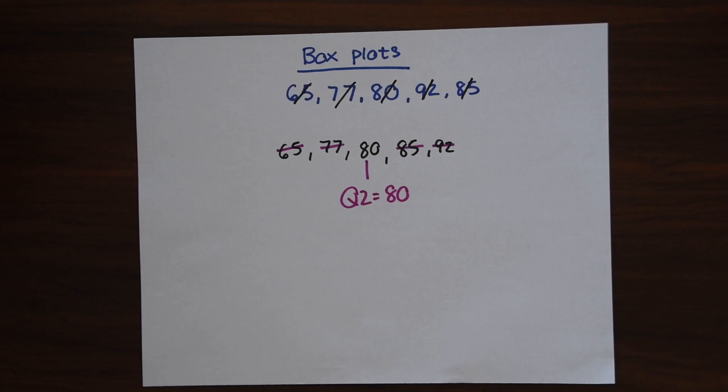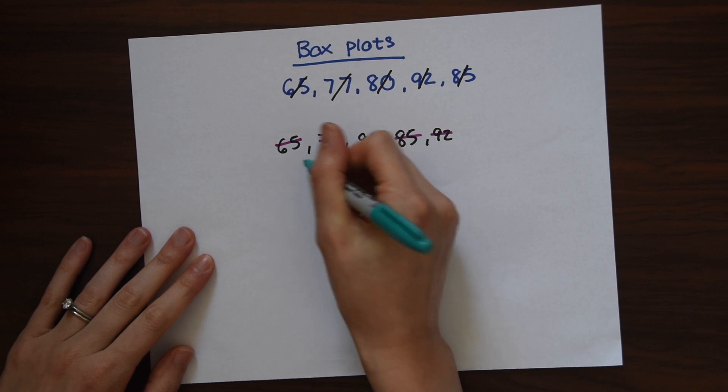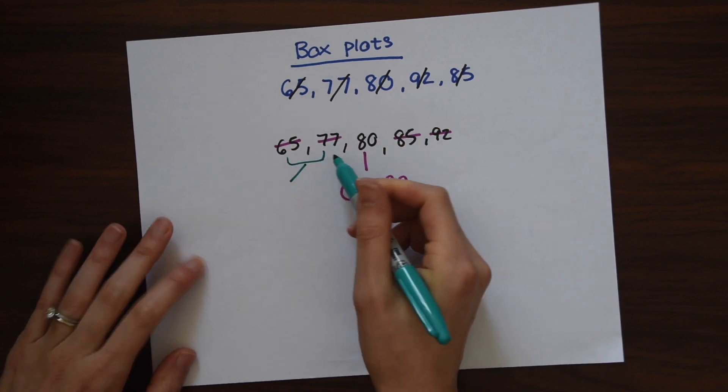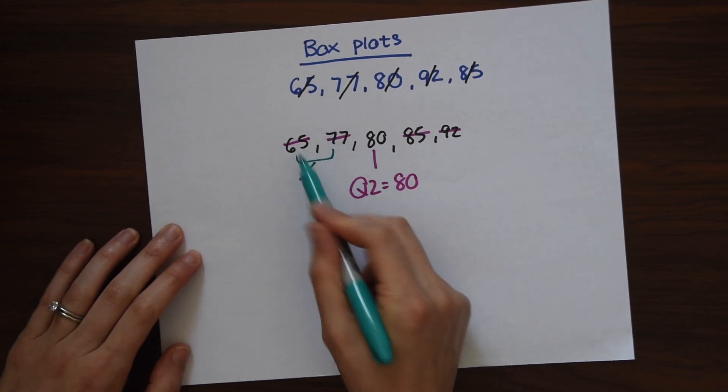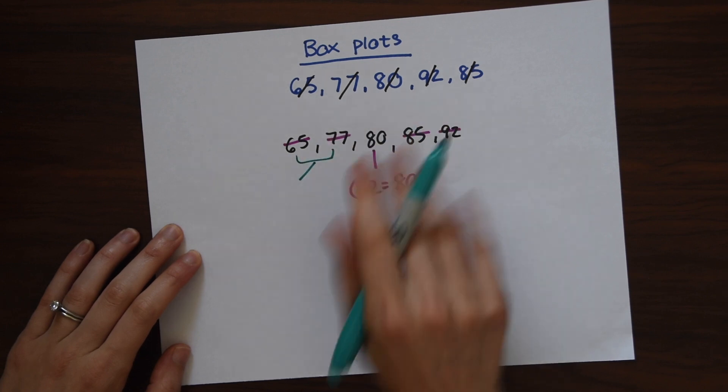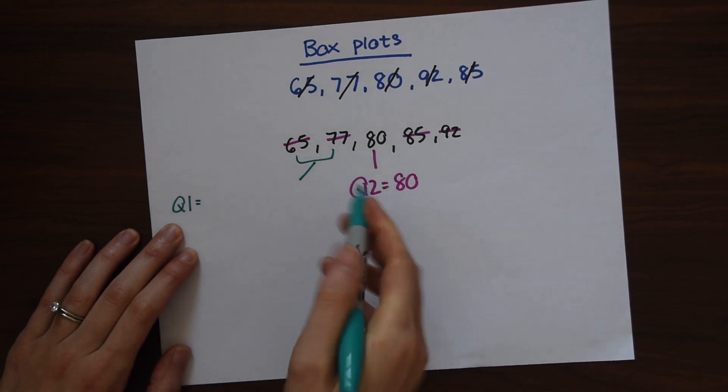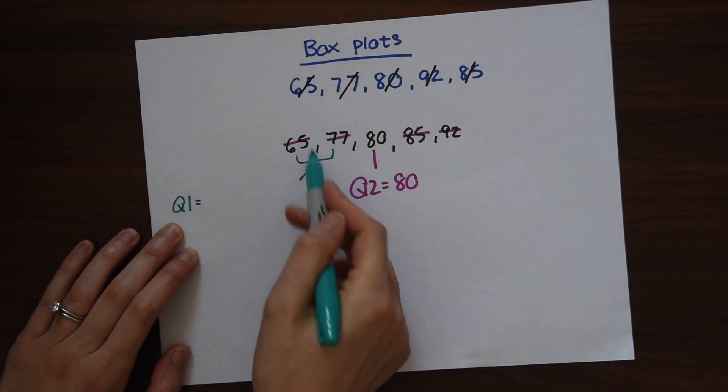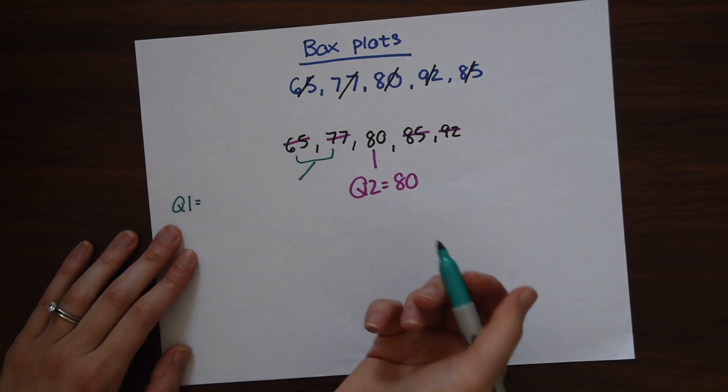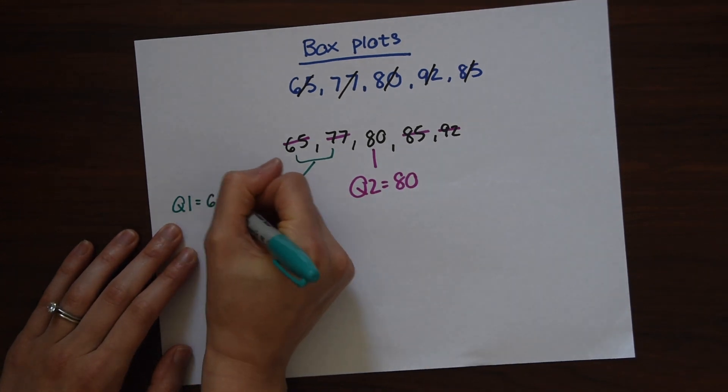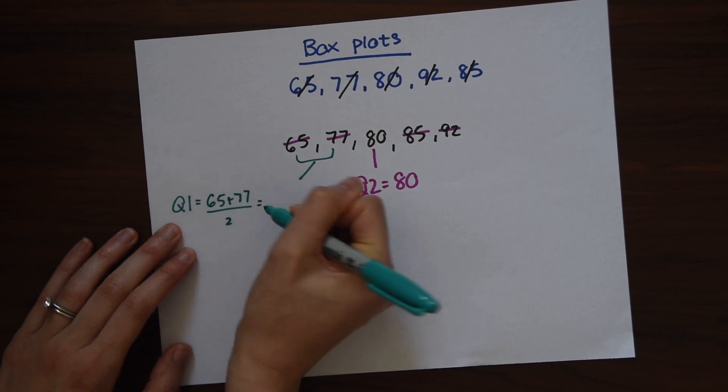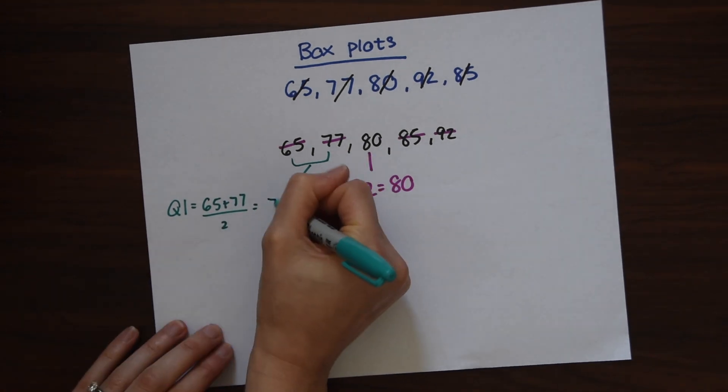We're going to be finding quartile 1, which is the first half of the data. So we're just looking at this part, ignoring the rest, and finding the median for quartile 1. Notice there's two numbers here so we don't have a middle number to work with. So we're going to find that middle number. To do that we're just going to find the average of these two. So we have 65 plus 77 divided by 2 which is going to give us 71.